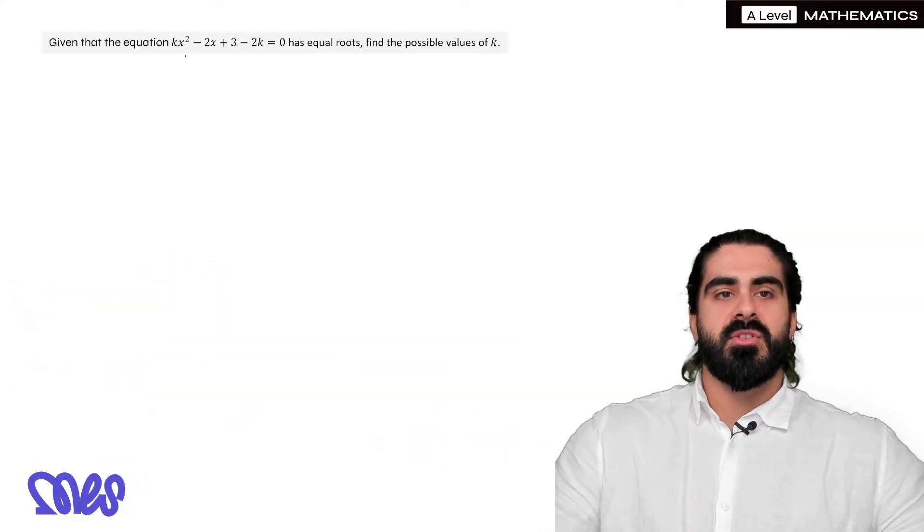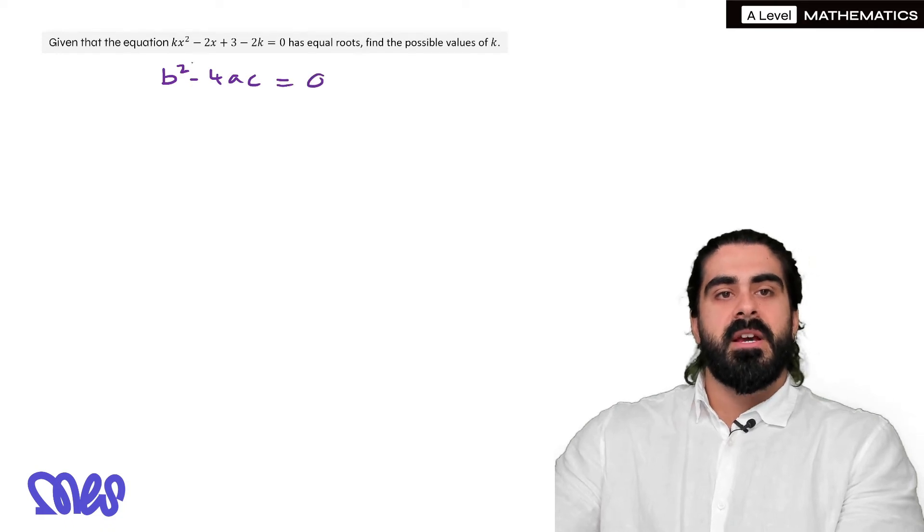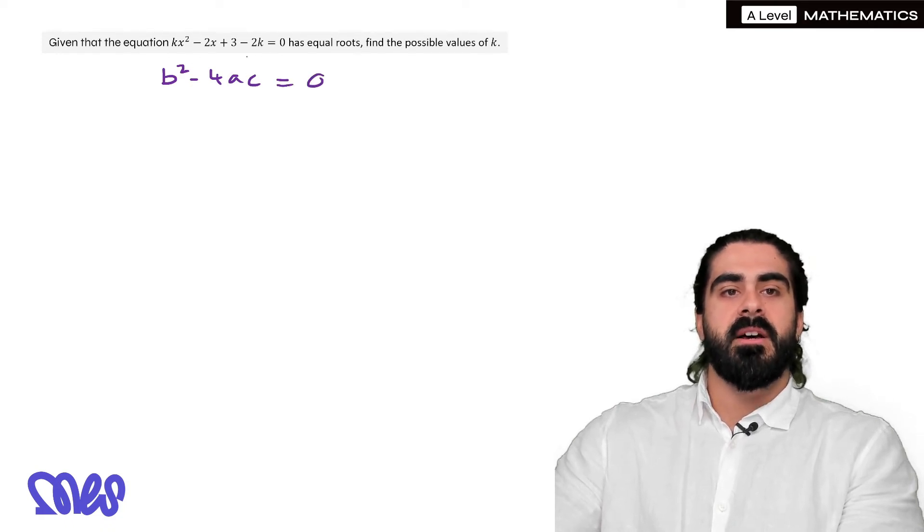Given that the equation kx squared minus 2x plus 3 minus 2k equals zero has equal roots, find the possible values of k. So the first thing you want to say for equal roots is that the discriminant is zero. Then we just label what is b, a and c.